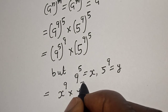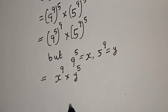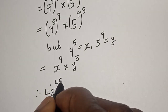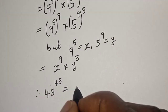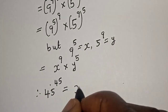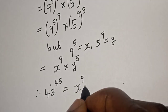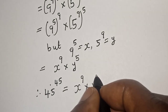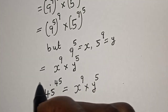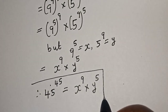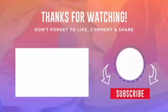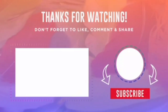Therefore, 45 to the power of 45 is equal to x raised to power 9 times y raised to power 5. This is the final answer. If you enjoyed the class, please don't forget to like, share, comment, and subscribe. Thank you.